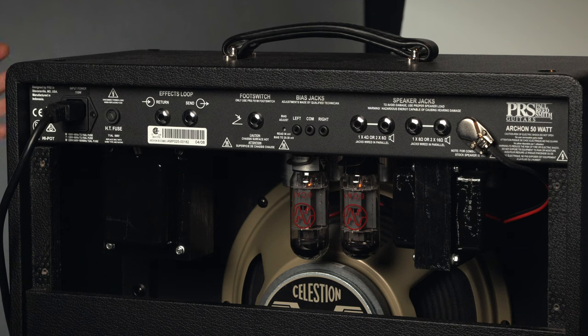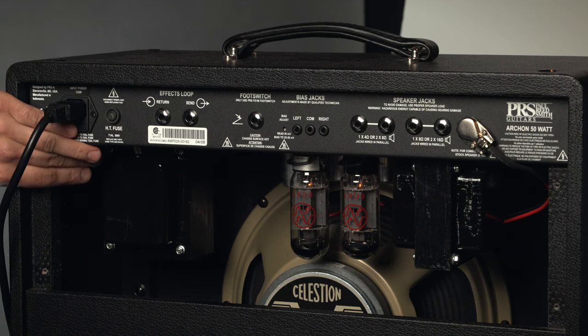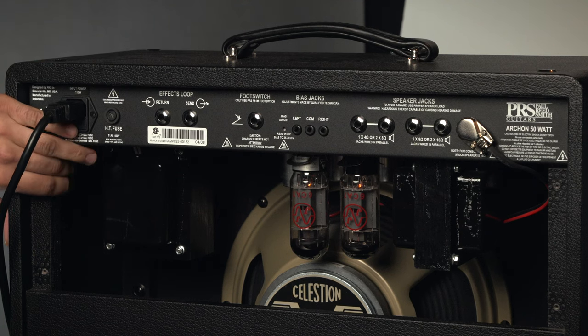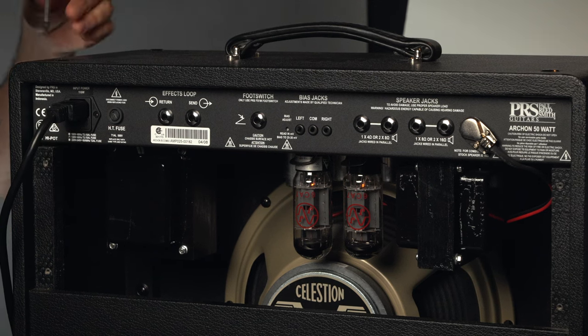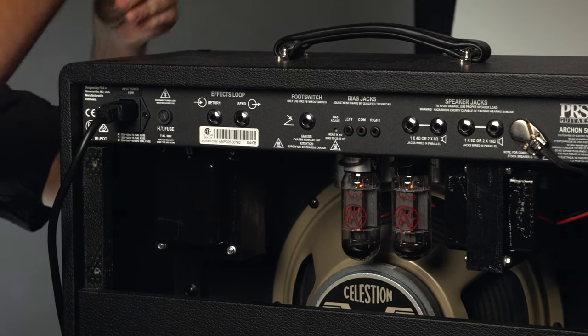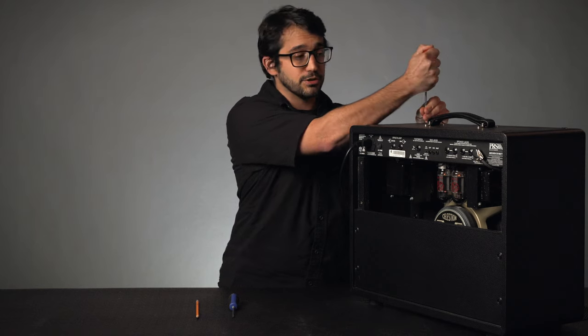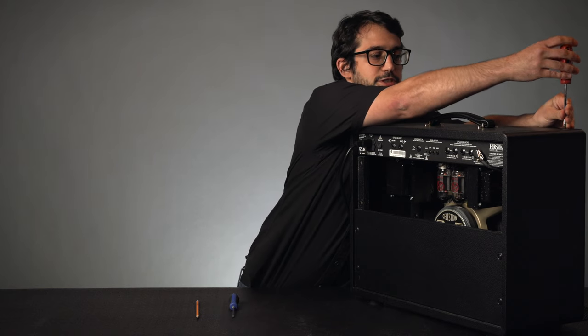The first place you should look is the screws which attach the actual chassis of the amplifier into the cabinet, and you simply want to just take your screwdriver and make sure that they're hand tight. You don't need to kill it, but you want to make sure that they are reasonably tight here.